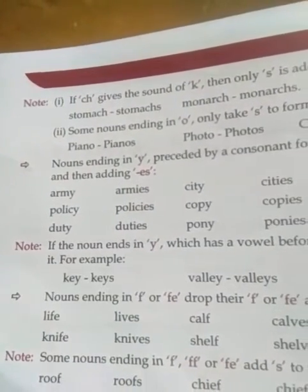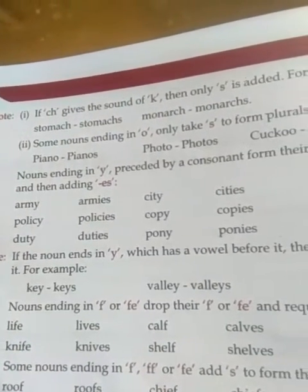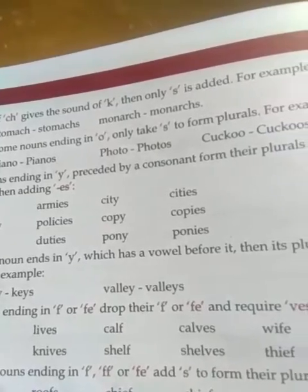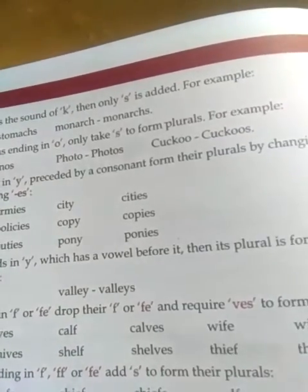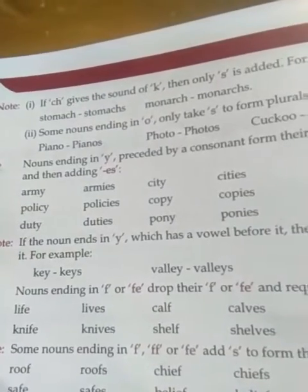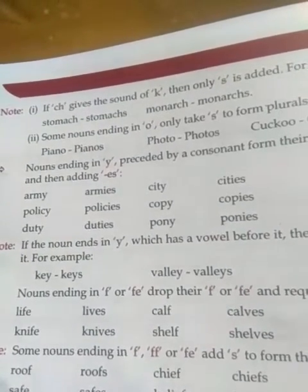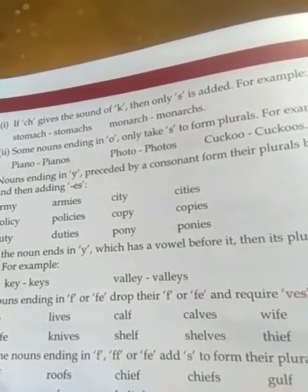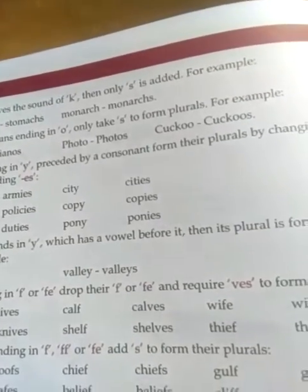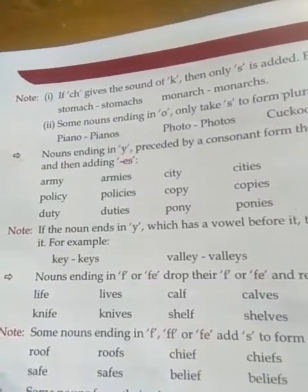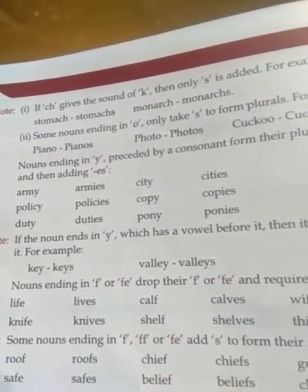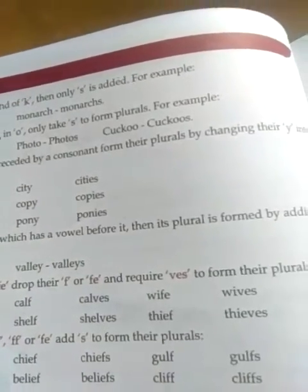Note: Some nouns ending in 'f', double 'f', or 'fe' add 's' to form their plural. For example: roof → roofs, chief → chiefs, gulf → gulfs, safe → safes, belief → beliefs, cliff → cliffs.